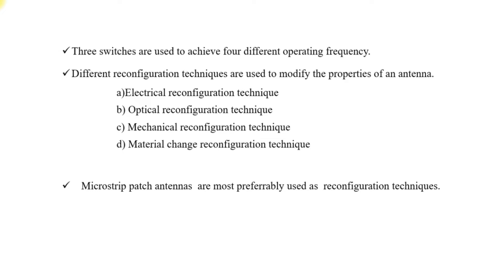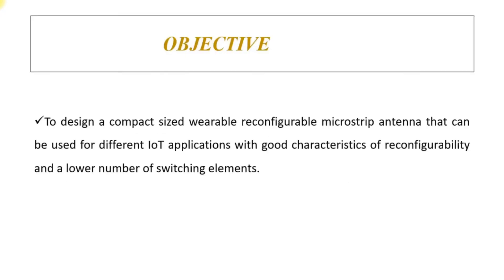Different reconfiguration techniques are used to modify the properties of the antenna. Generally, people use: electrical reconfiguration, optical reconfiguration, mechanical reconfiguration, and material change reconfiguration. Microstrip patch antennas are preferably used as the base for reconfiguration techniques. In most cases, a basic microstrip patch antenna is used and the frequency is reconfigured.